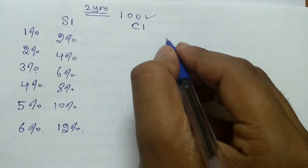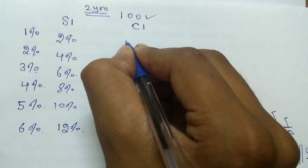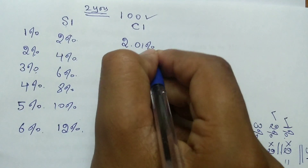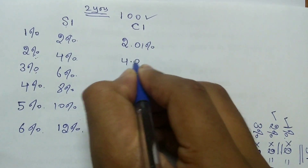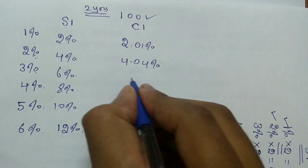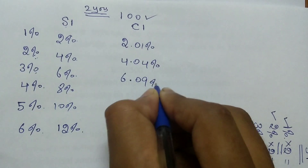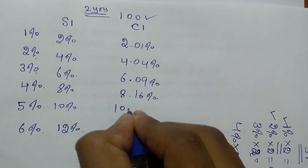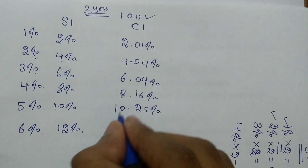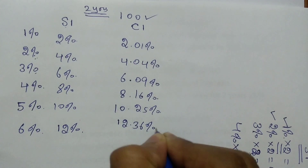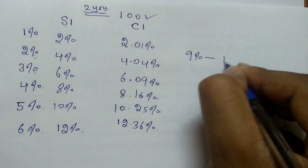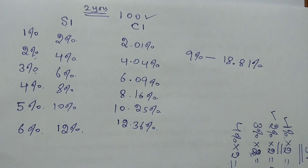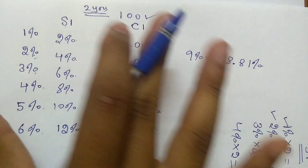Now for compound interest: 1% for 2 years = 2.01%; 2% for 2 years = 4.04%; 3% for 2 years = 6.09%; 4% for 2 years = 8.16%; 5% for 2 years = 10.25%; 6% for 2 years = 12.36%. For 9% for 2 years: 9 × 2 = 18, and 9 squared = 81, so it is 18.81%.